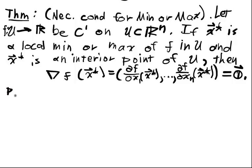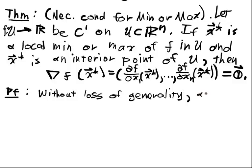So the proof of this is actually pretty straightforward. So without loss of generality, assume x* is a max. Because we could always just consider negative f if we so desire.